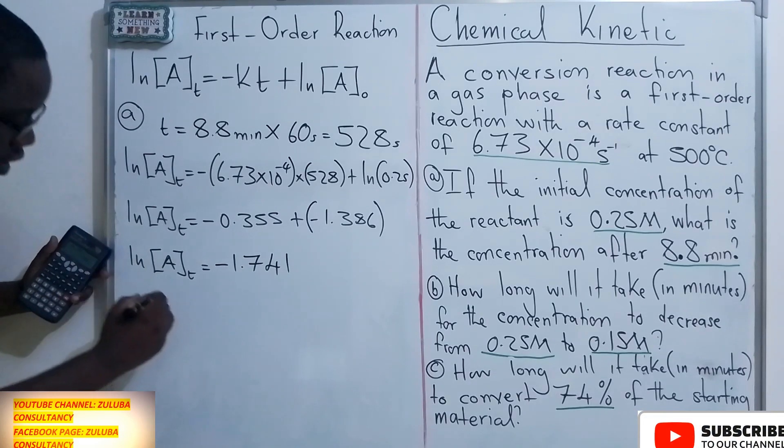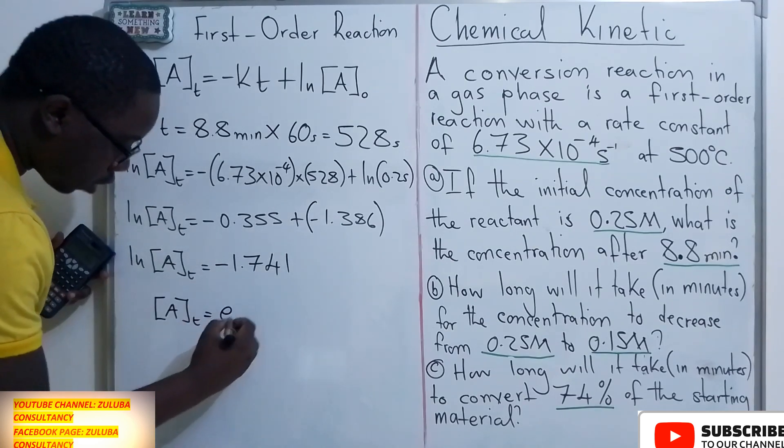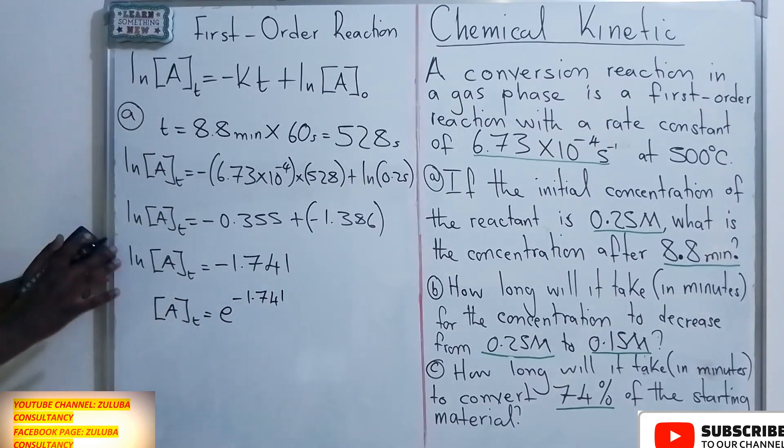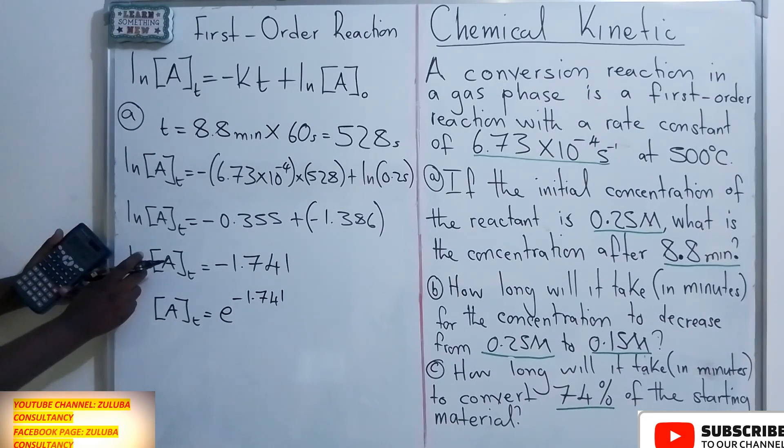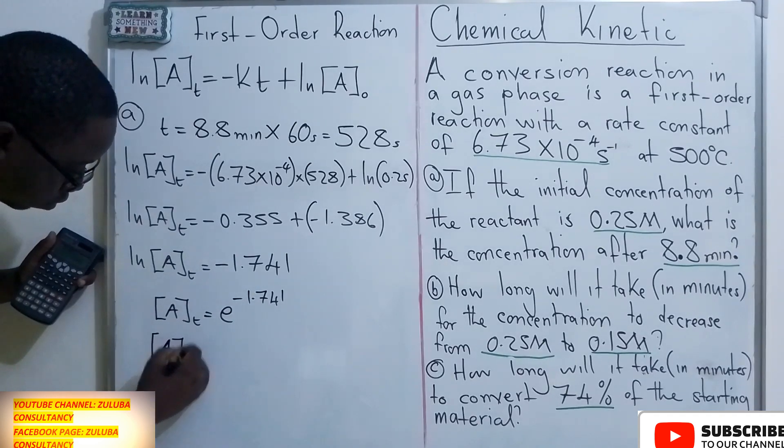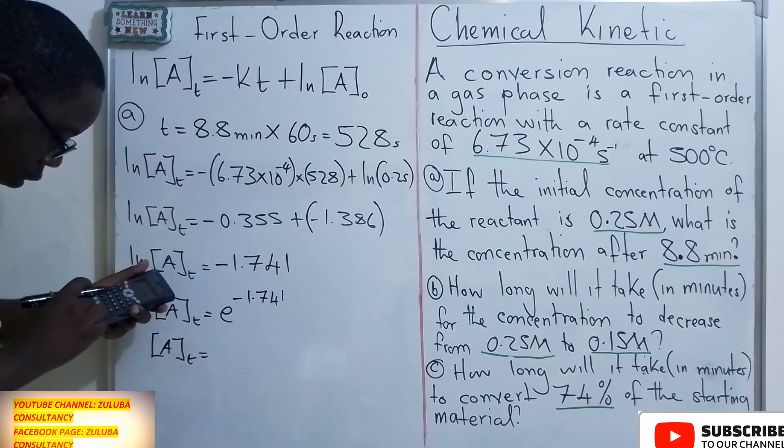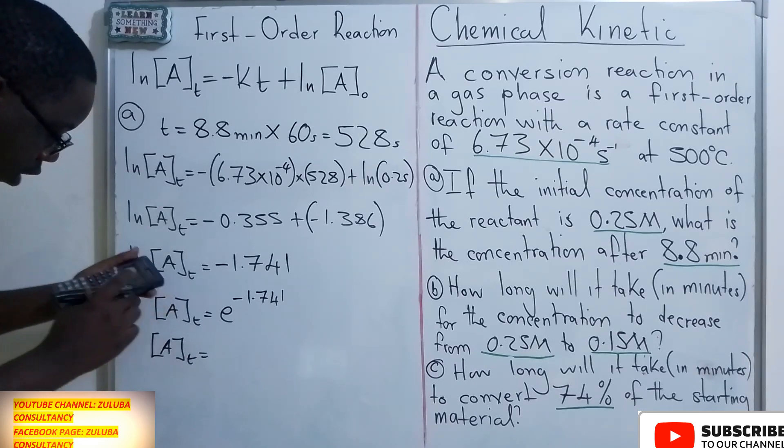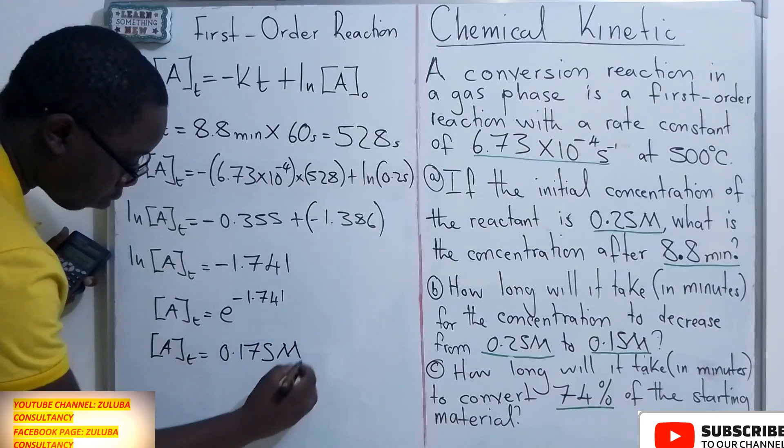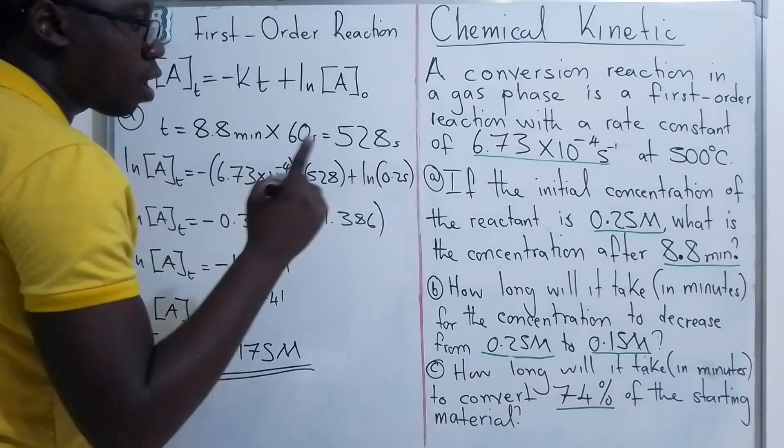At this point, for us to get the concentration of [A]t, we will use the exponential function of this value we have. This is a rule that the natural log can simplify by introducing the exponential function. So we have [A]t as the exponential function of the answer we got, giving us 0.175 M. This is the concentration that will remain after 8.8 minutes.